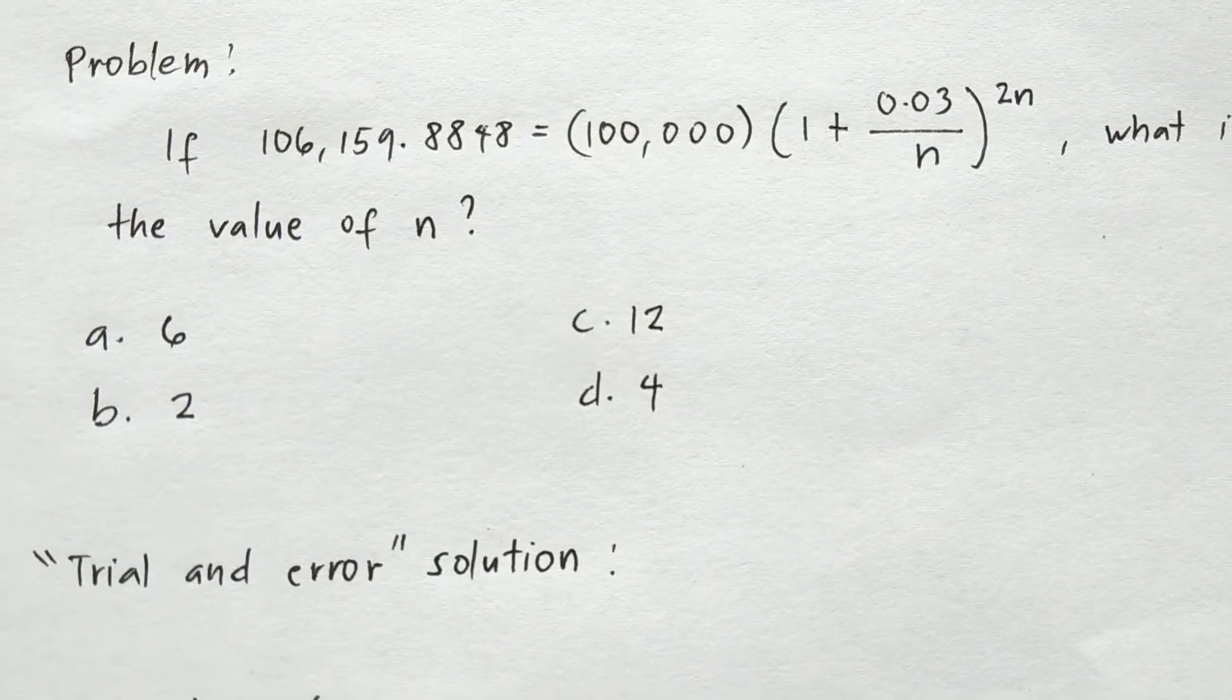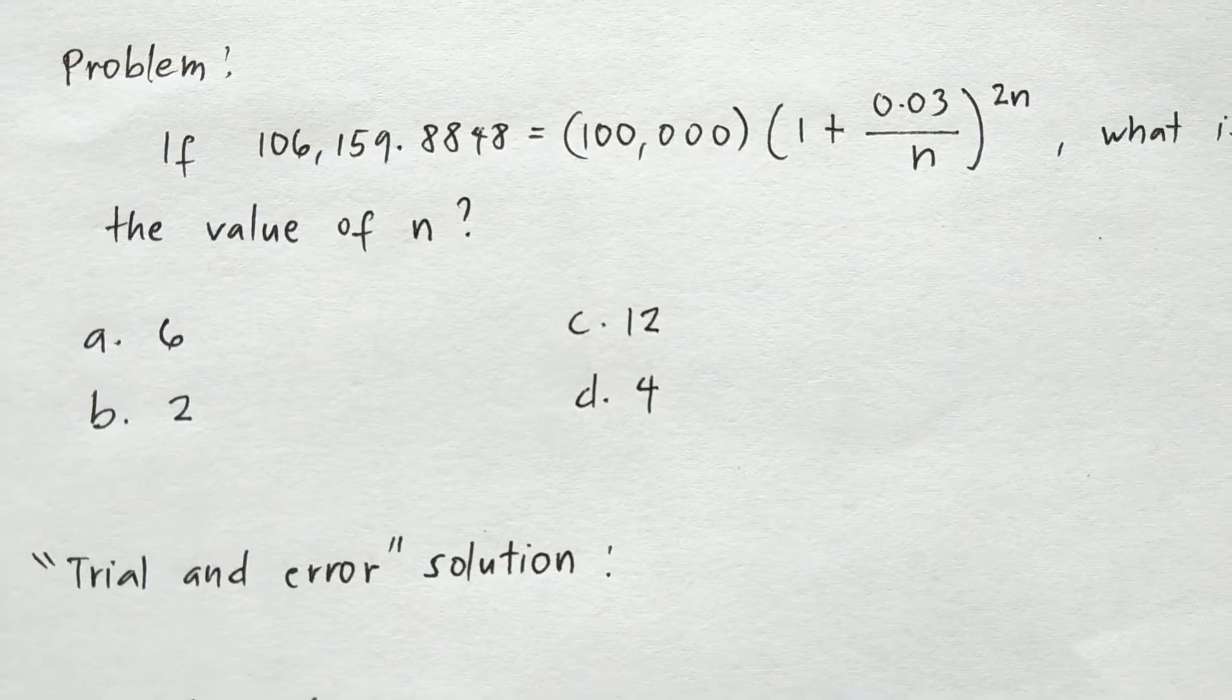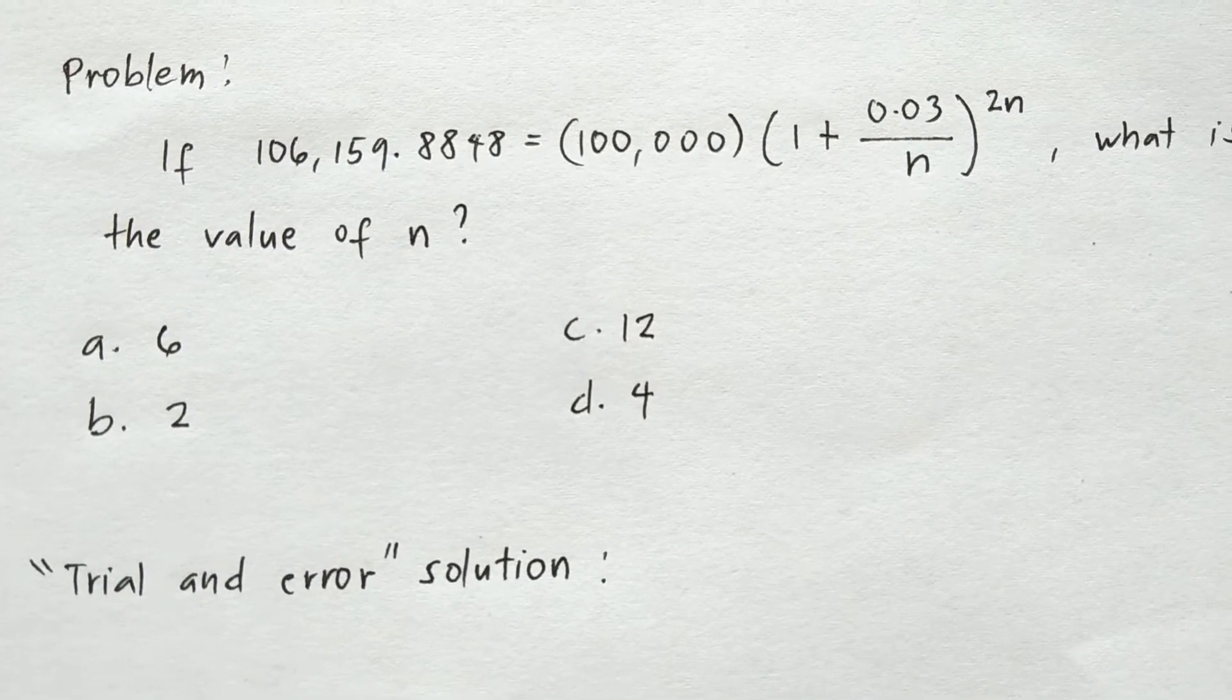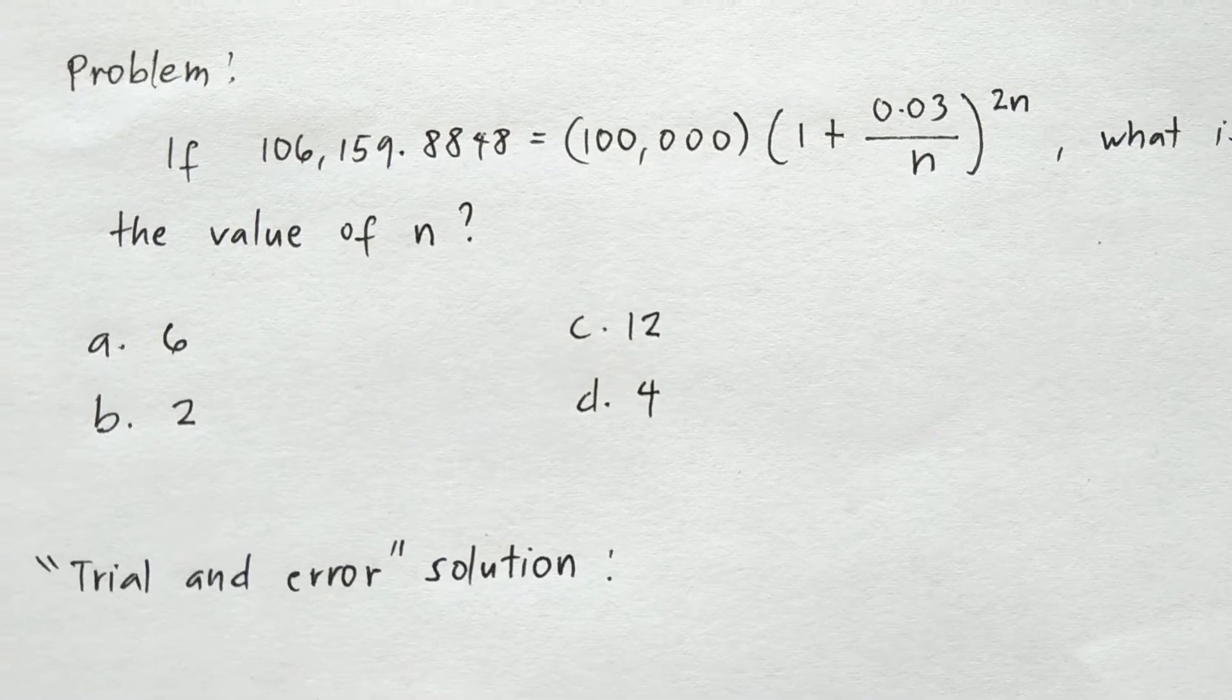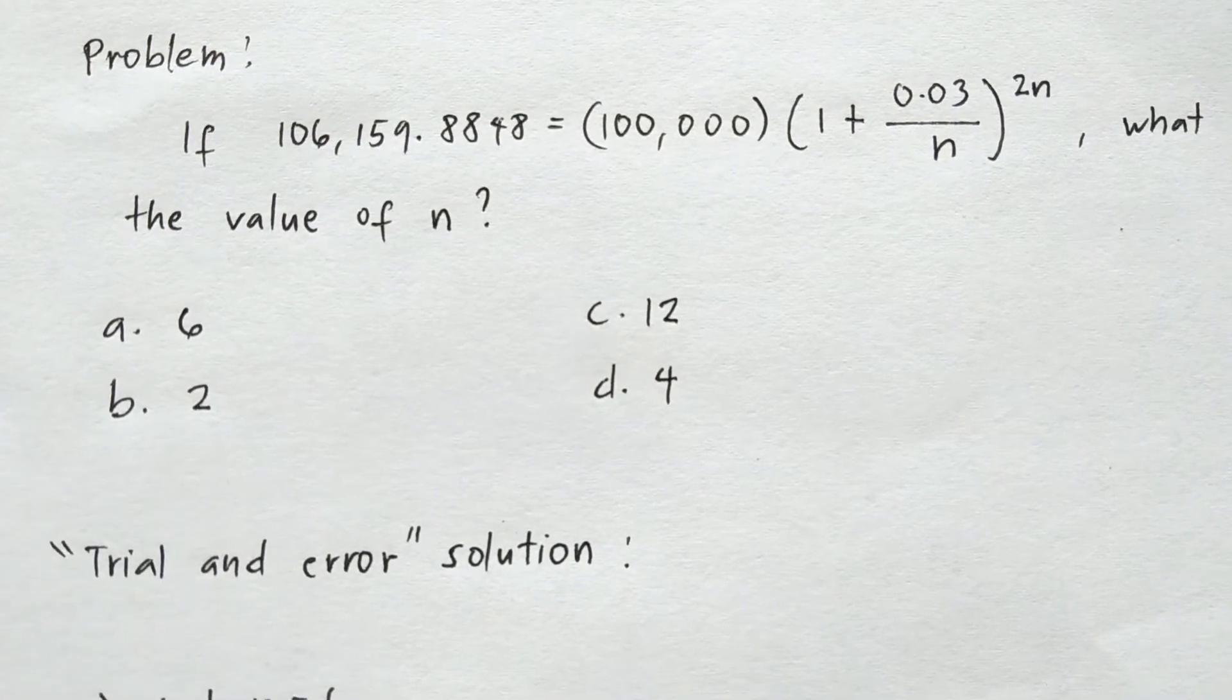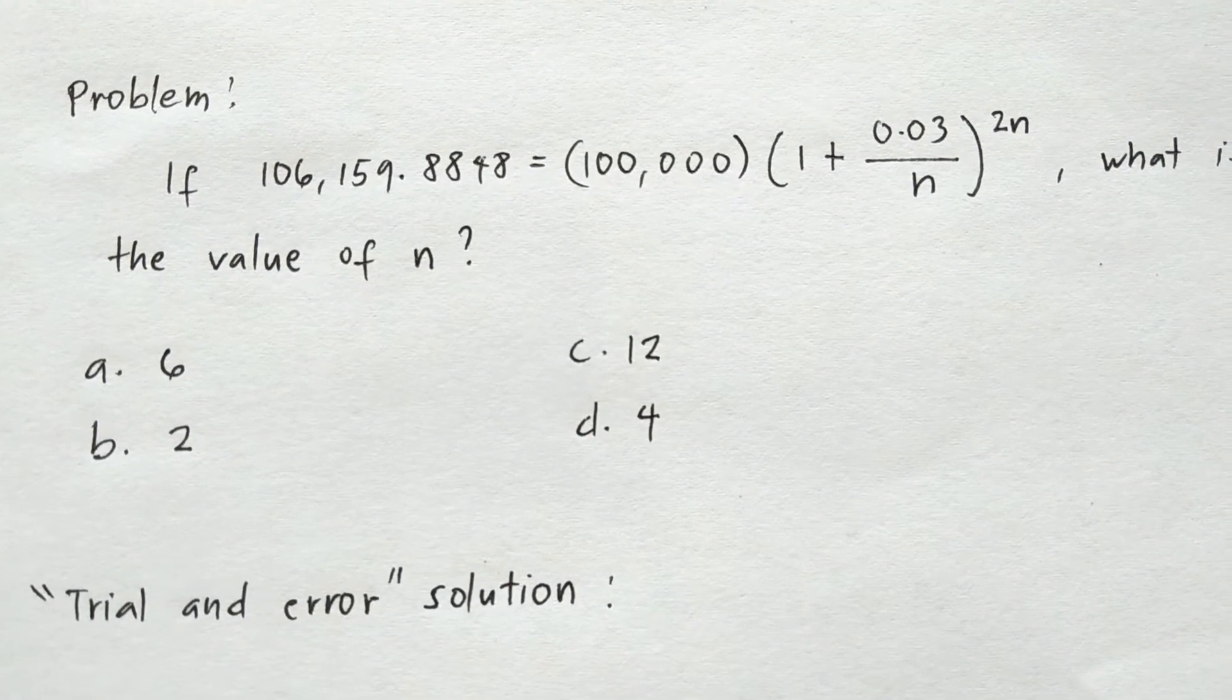If you say n equals 2, that means compounded semi-annually. If n equals 12, that means compounded monthly, and if n equals 4, that means compounded quarterly. So let me clarify: if n equals 6, that means compounded bimonthly, every two months.